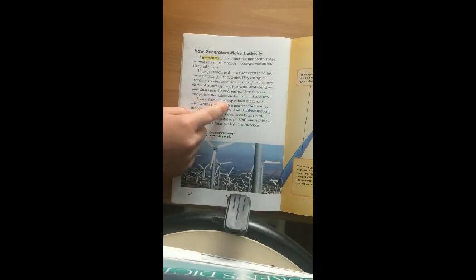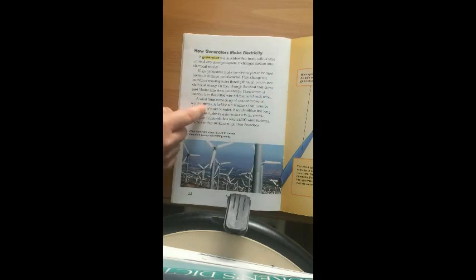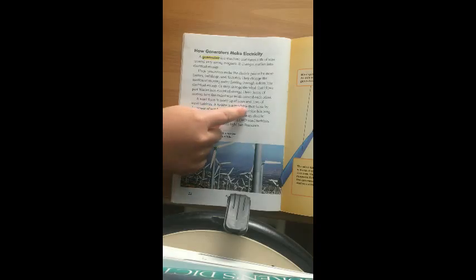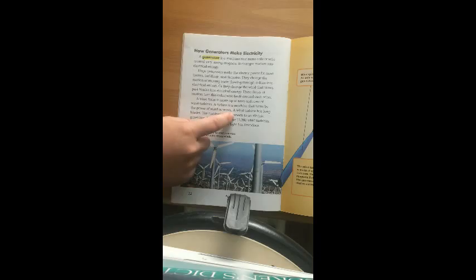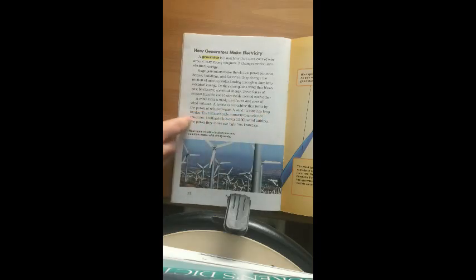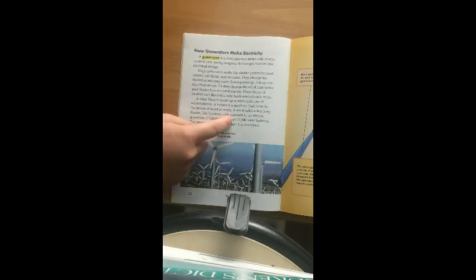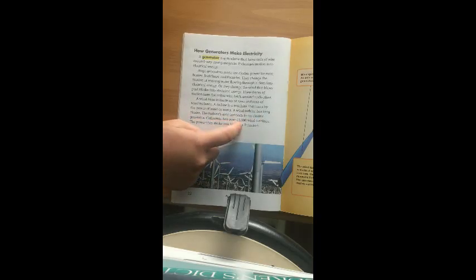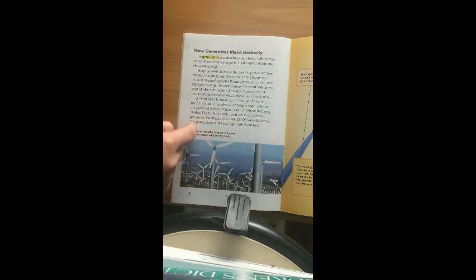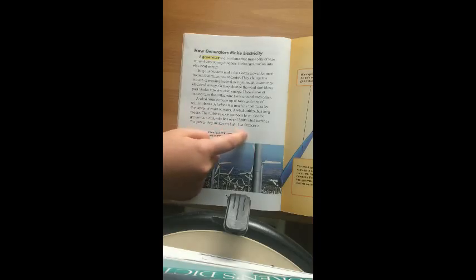A wind farm is made up of rows and rows of wind turbines. A turbine is a machine that turns by the power of wind or water. A wind turbine has long blades. The turbine's axle connects to an electric generator. California has over 13,000 wind turbines. The power they make can light San Francisco.